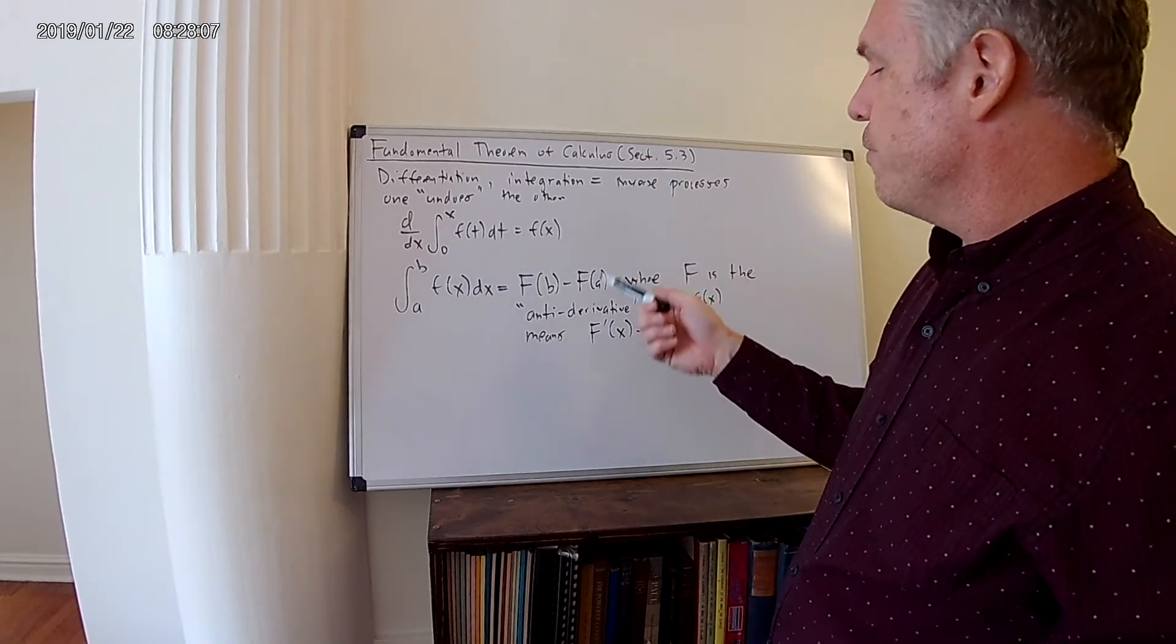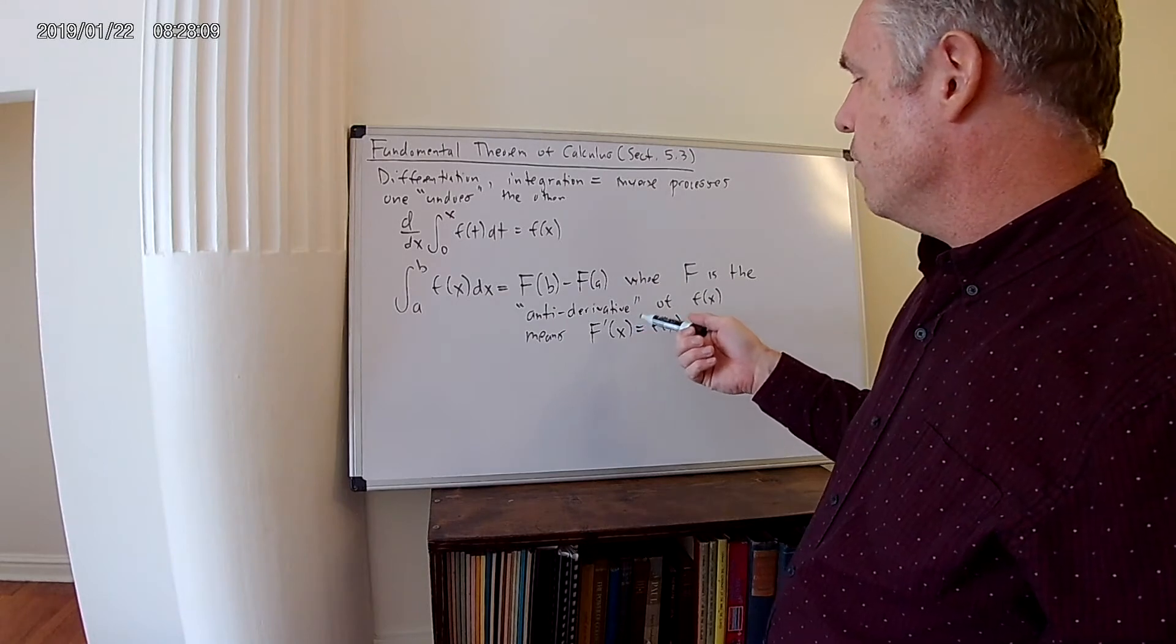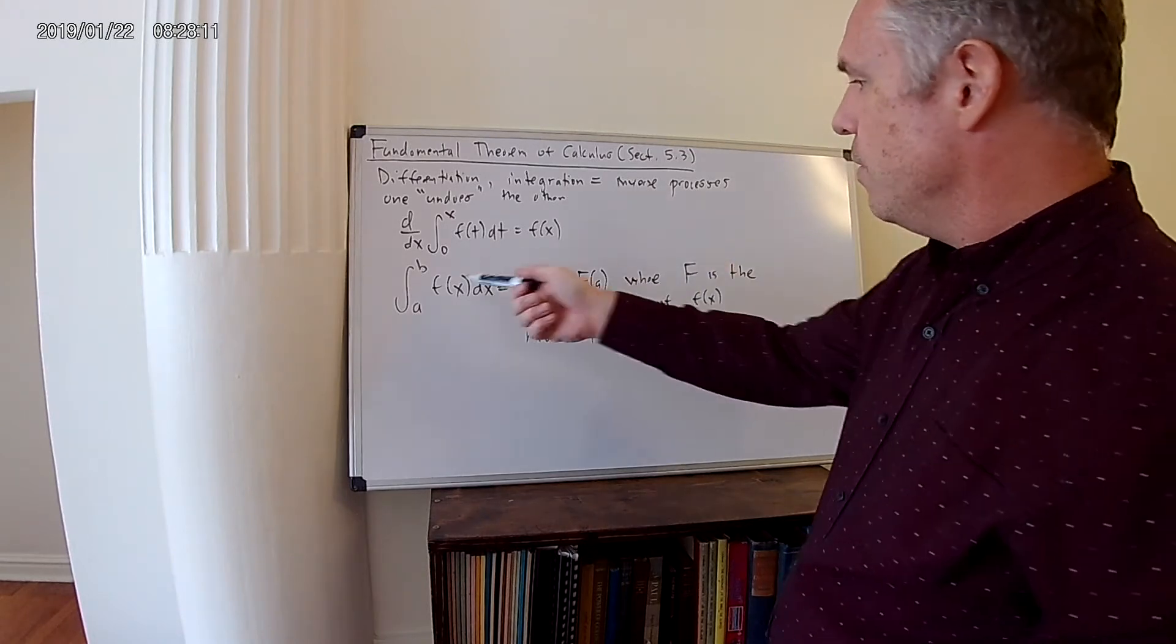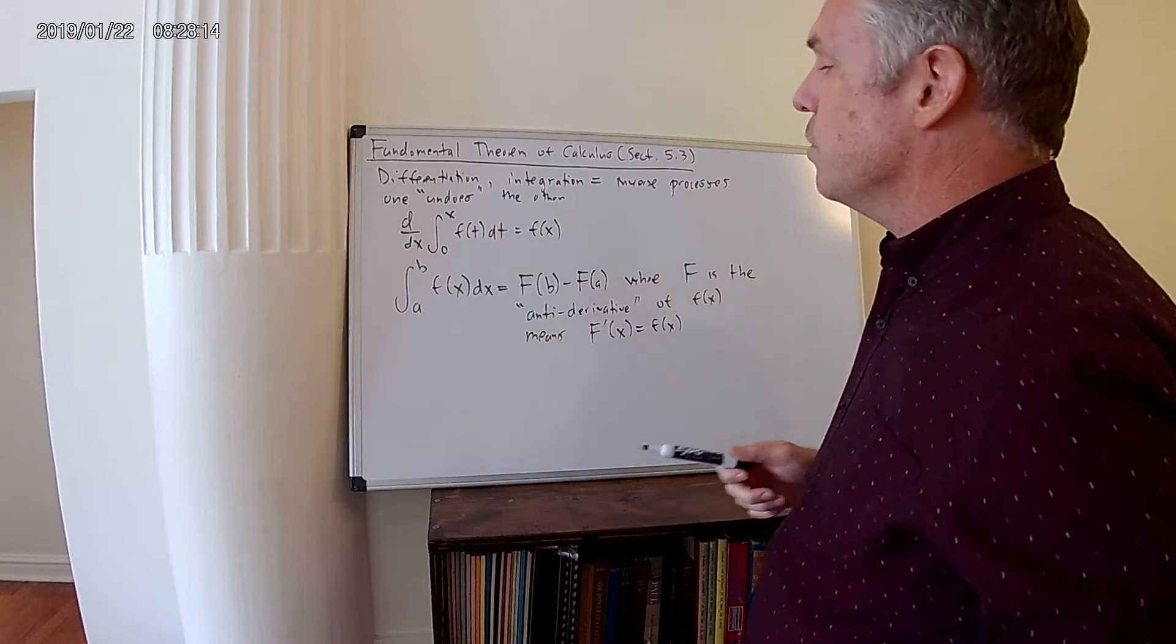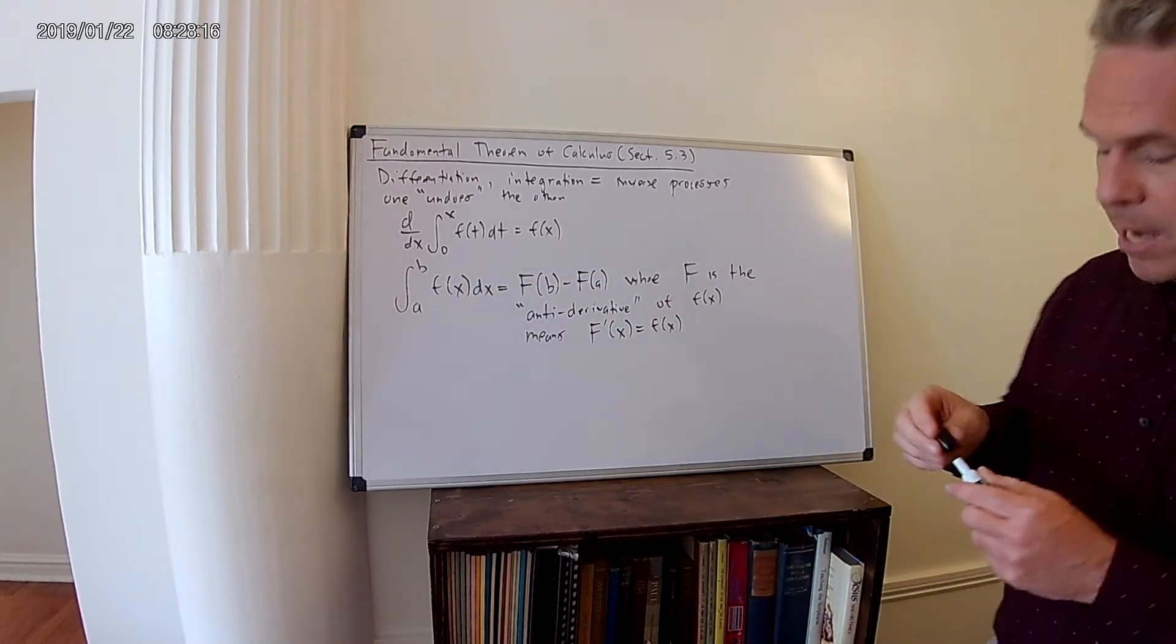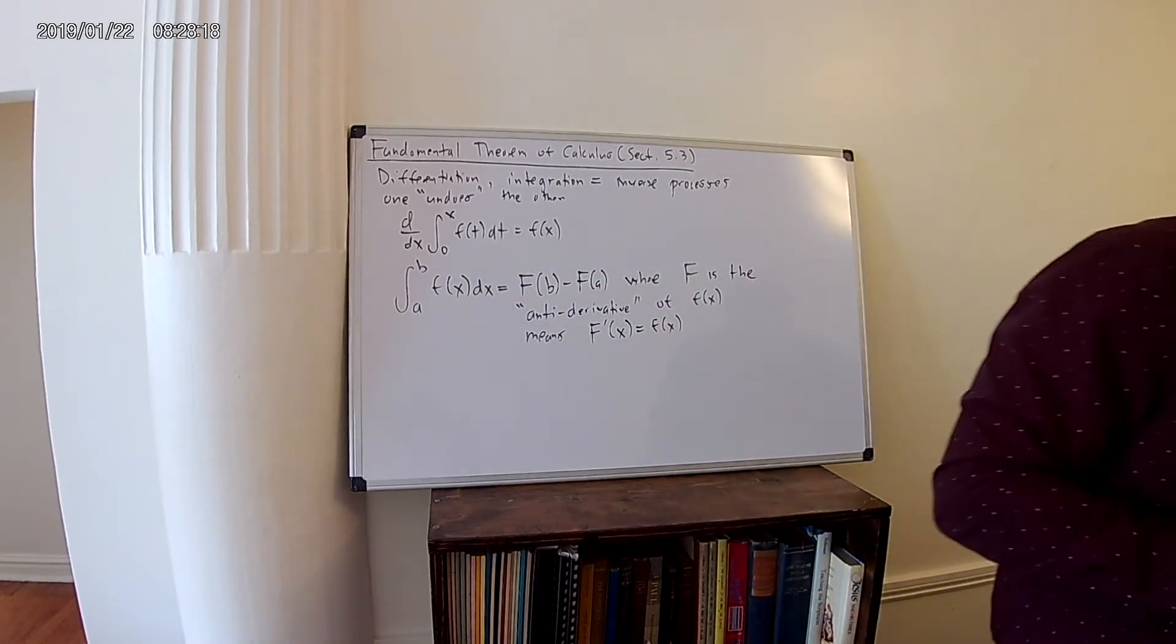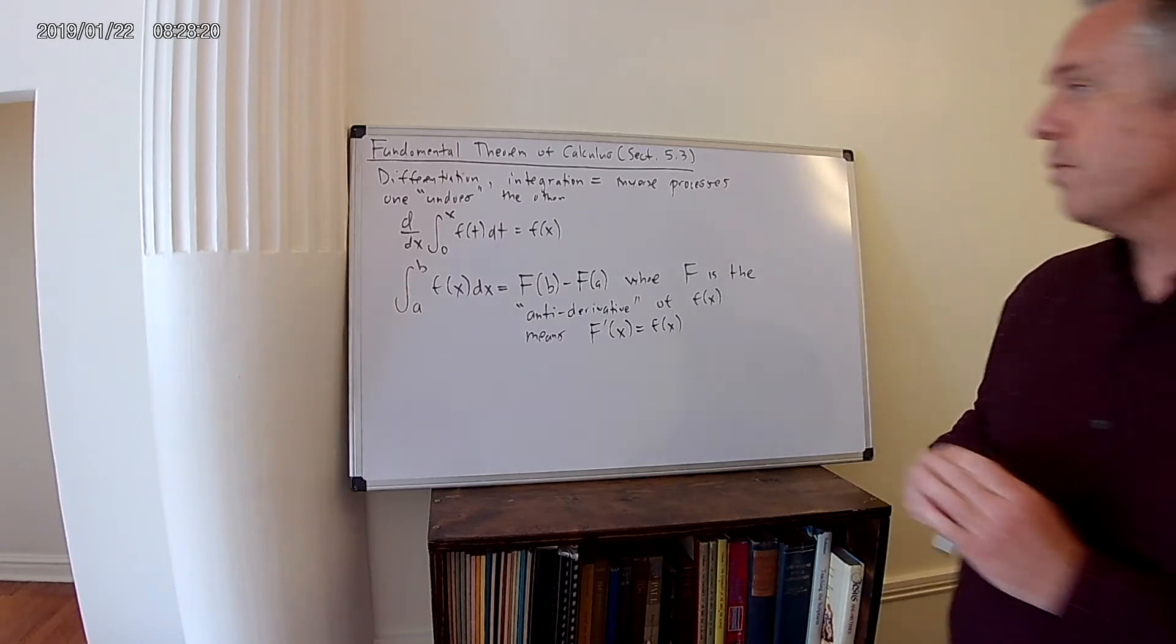So what we want to do is we want to find the particular function, the antiderivative of this function, whose derivative is equal to this function itself. That might confuse you guys. I hope you're not too confused. I'm going to consider a couple examples.